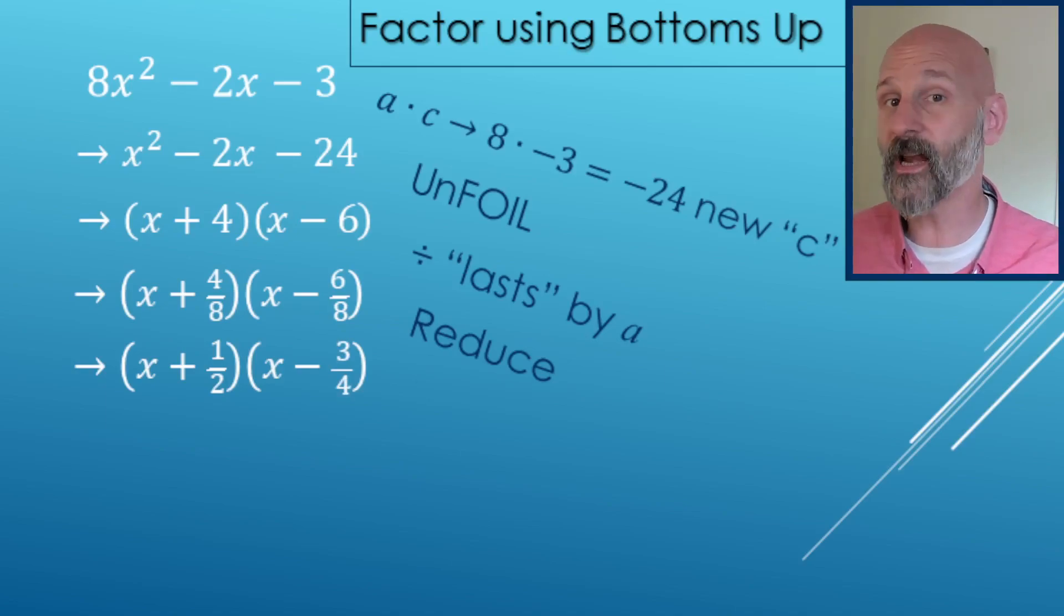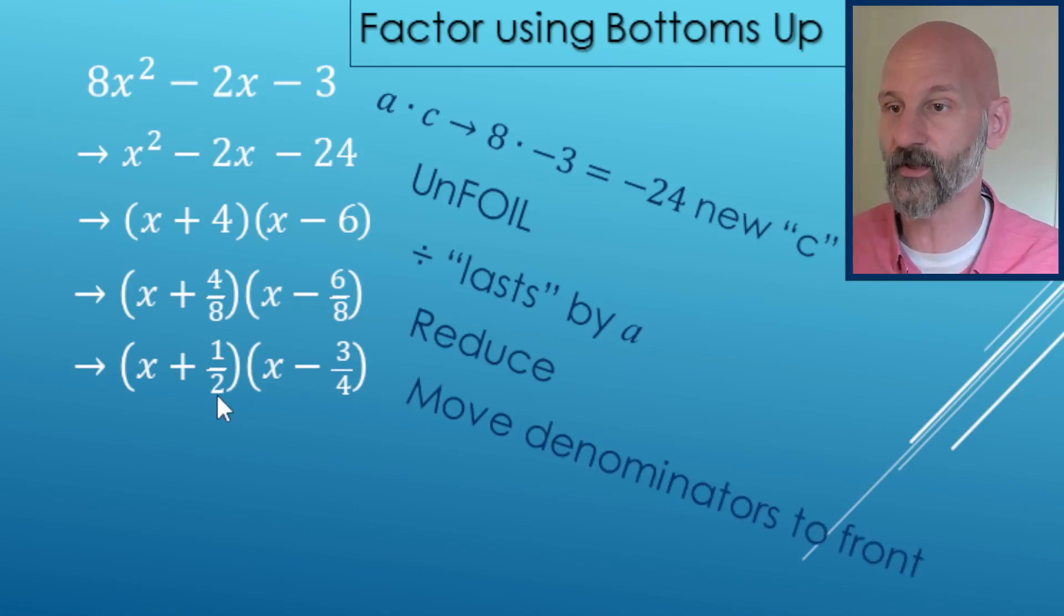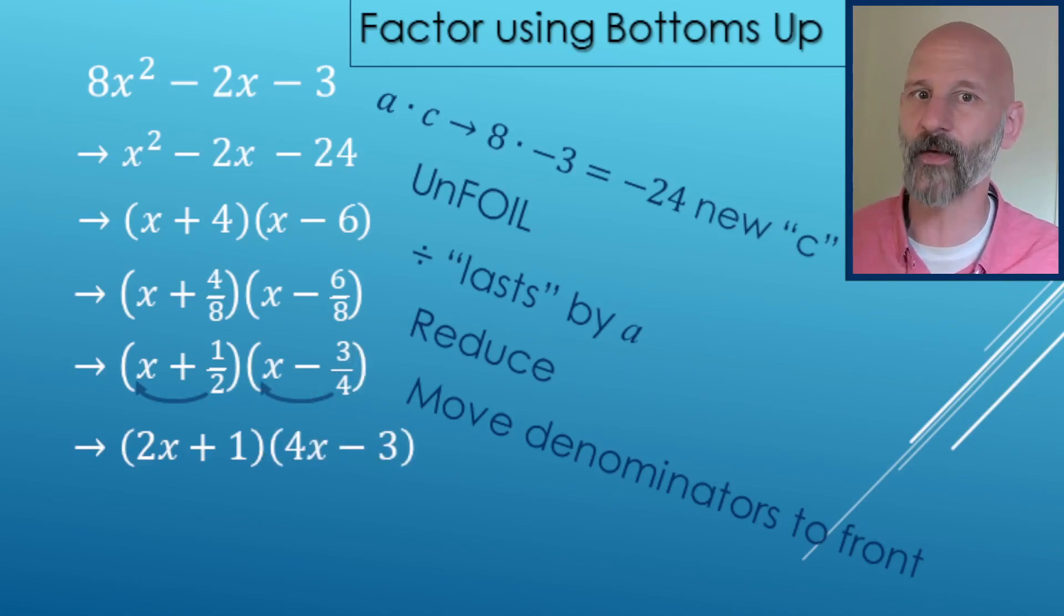Last step, move the denominators to the front. So instead of X plus one half, that two is moving out in front and it's going to be two X plus one, two X plus one. That four, it's going to move out in front. So it's going to make four X minus three. And that's the bottoms up method right there.